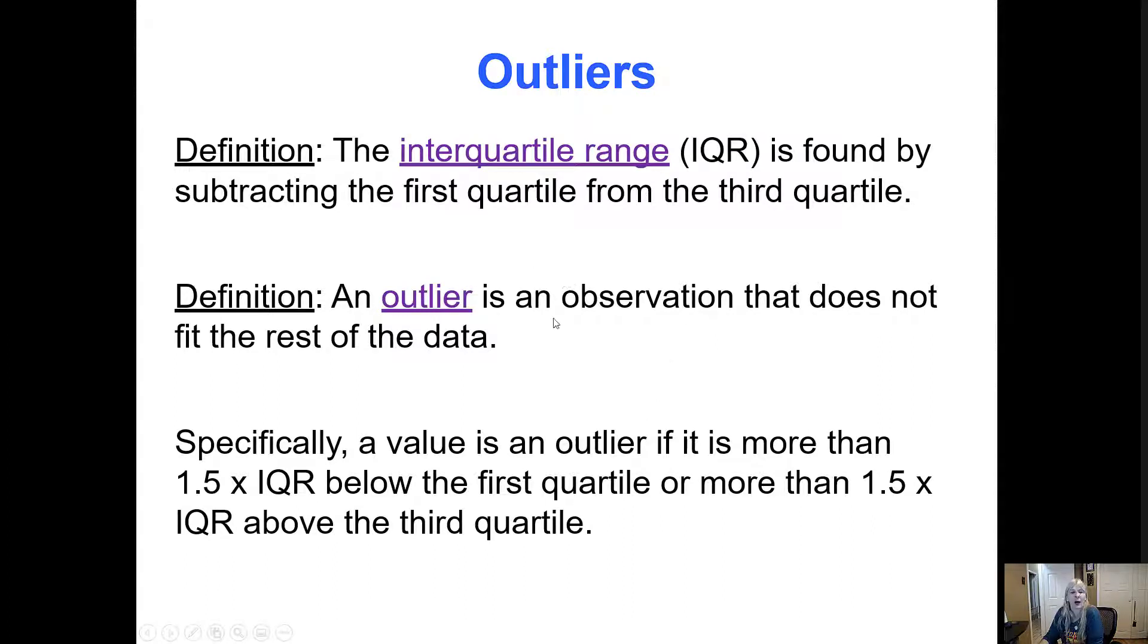Can look at outliers, depending on if you're way above, and they give an actual formula here, 1.5 times this interquartile range. And it says found by subtracting the first quartile from the third, so Q3 minus Q1.